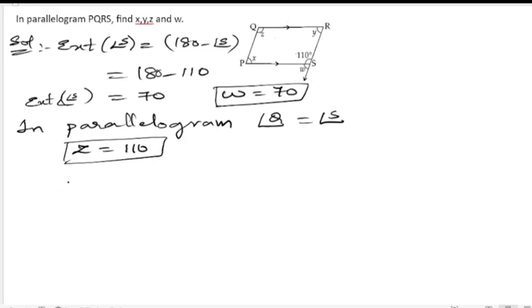Next, we know one more thing that the sum of the adjacent angles is 180 degrees. So now we can write, now angle R plus angle S is equals to 180 degrees.